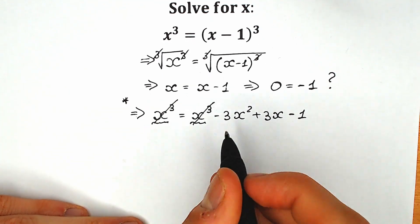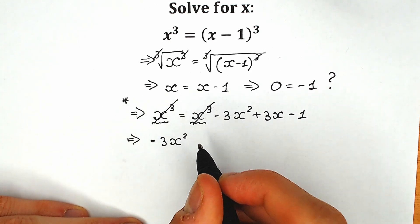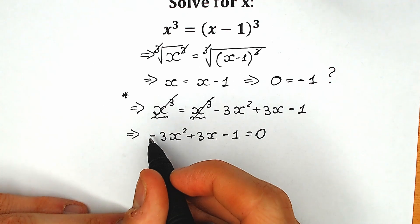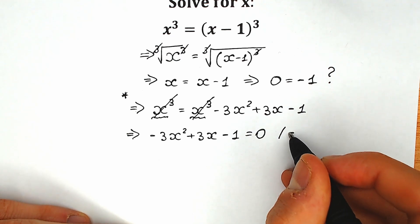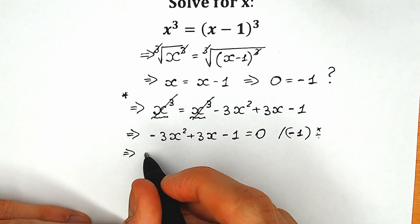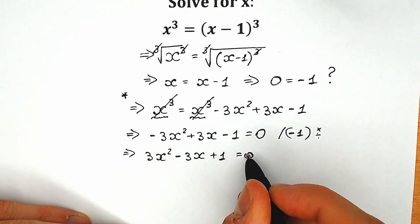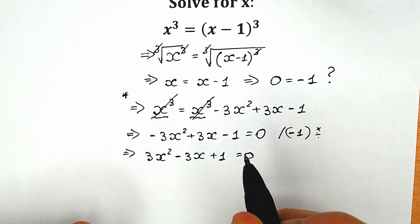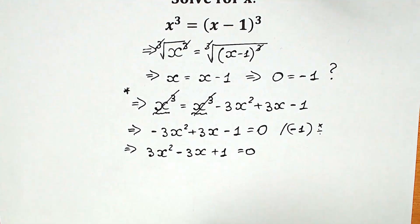What expression do we have right now? Let's change the position and write it on the left side. We have minus 3x squared plus 3x minus 1 equal to 0. We don't like this negative sign near the coefficient of x squared, so let's multiply both sides by minus 1. As a result, we have 3x squared minus 3x plus 1 equal to 0. Right now we have a quadratic equation, which means two roots in total according to the fundamental theorem of algebra.